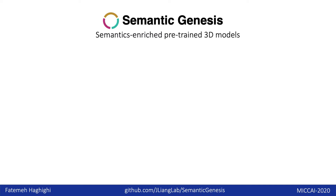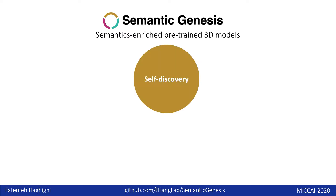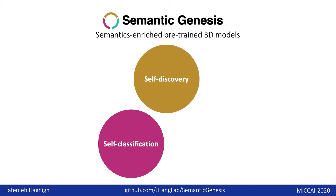Semantic genesis utilizes the consistent and recurrent anatomical patterns by self-discovery, self-classification, and self-restoration to learn the semantics of anatomy in medical images.